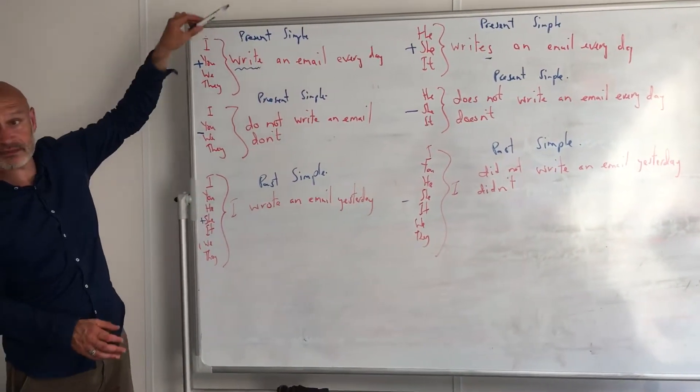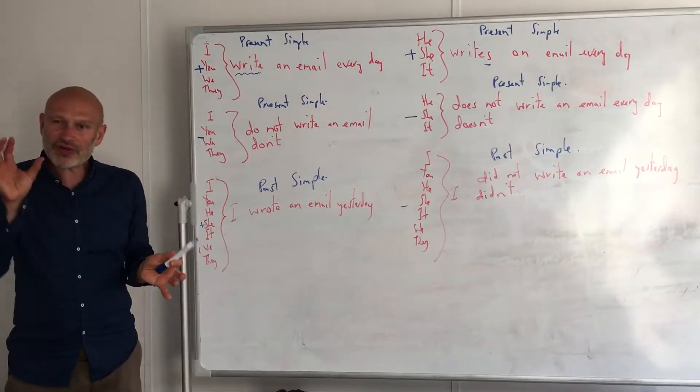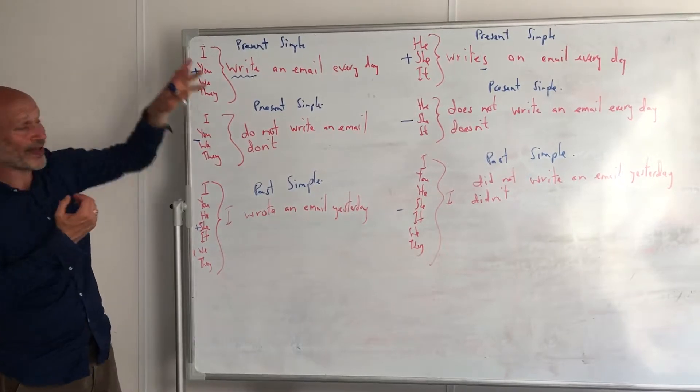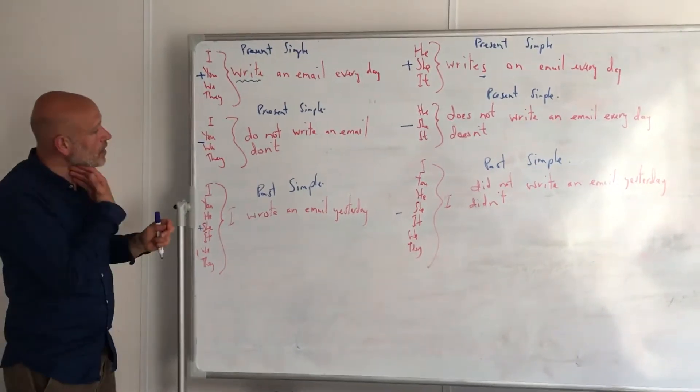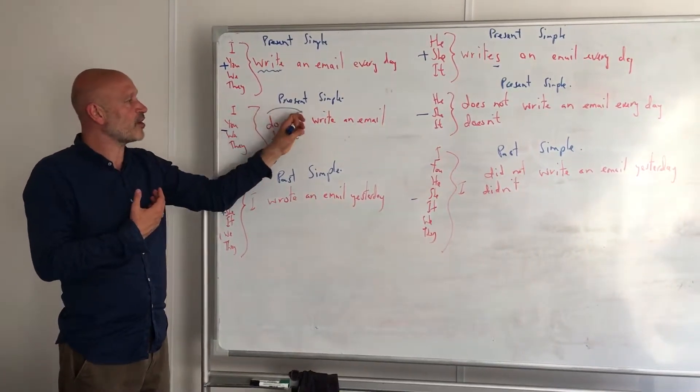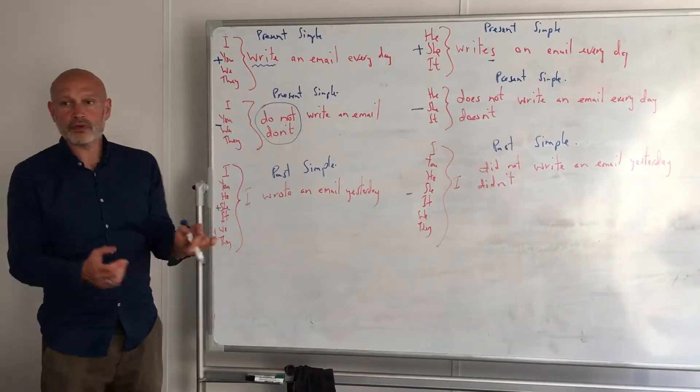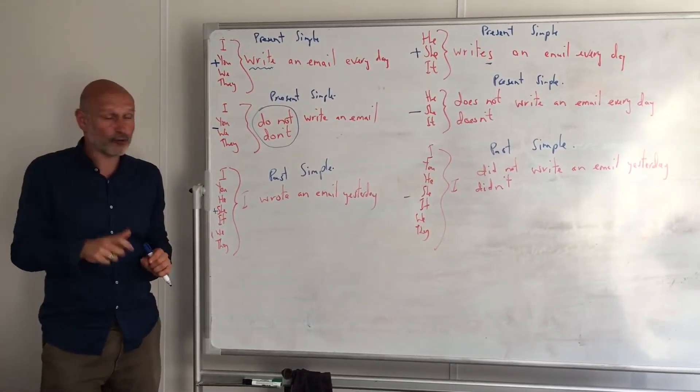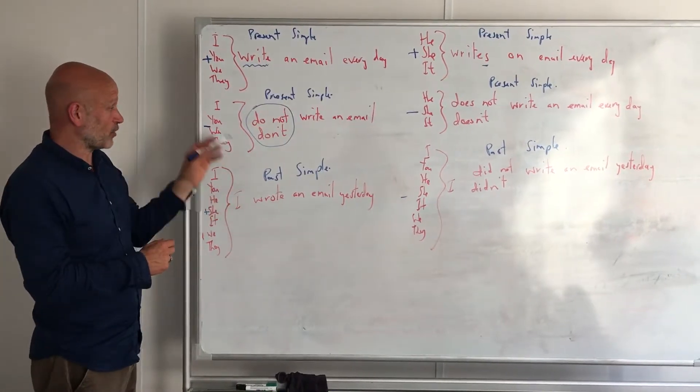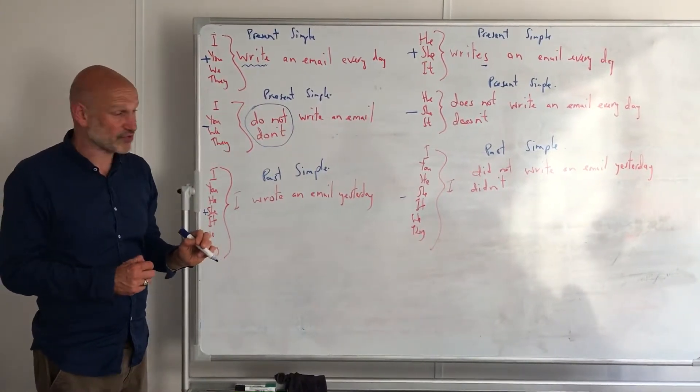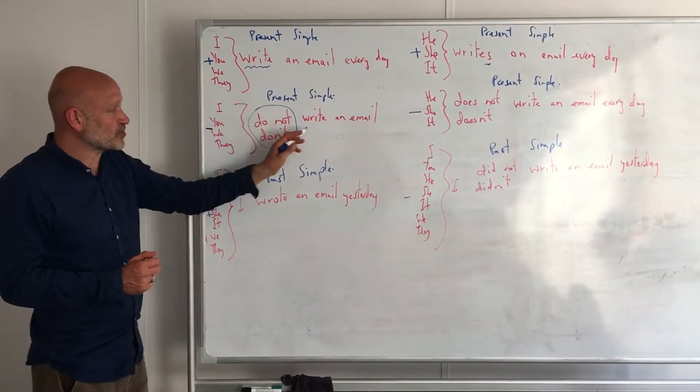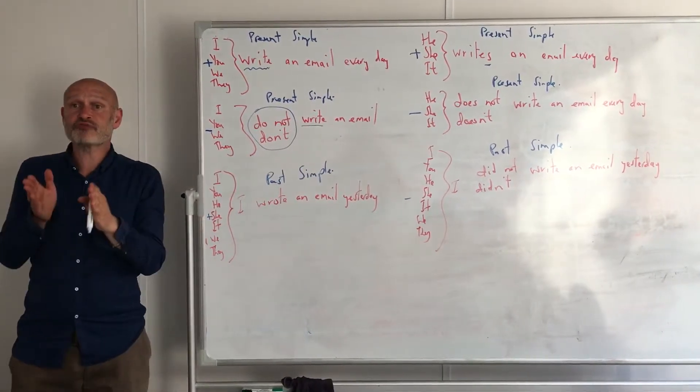Now when we transfer present simple to negative, we have to do a couple of things. Once again, we stick to I, you, we, they, or he, she, it. Now for I, you, we, they, we add this little verb, the little verb 'do' in the negative form. So here we say 'I do not write an email every day' or 'I don't write an email every day.'